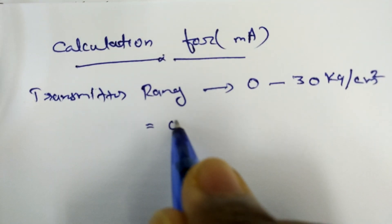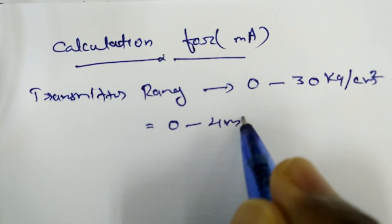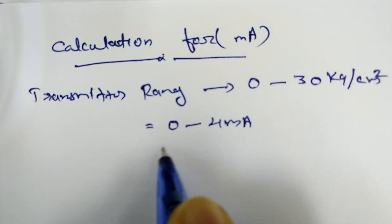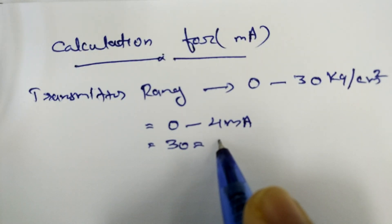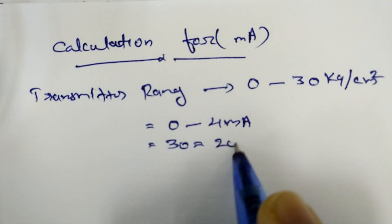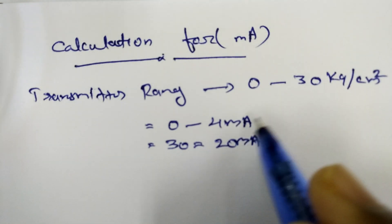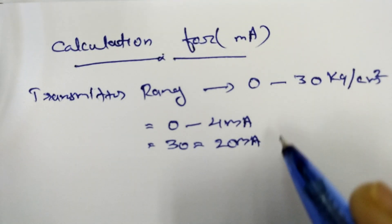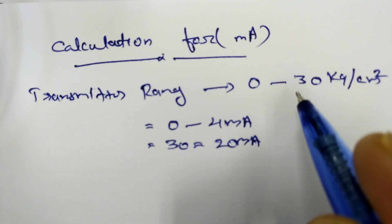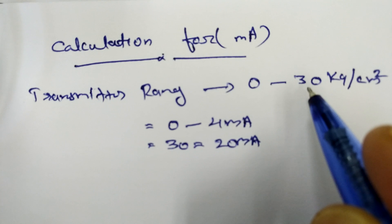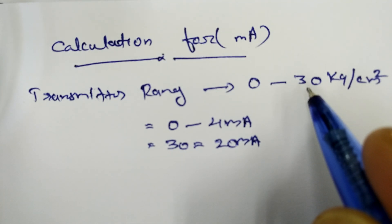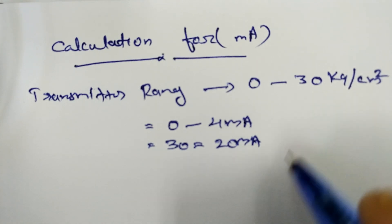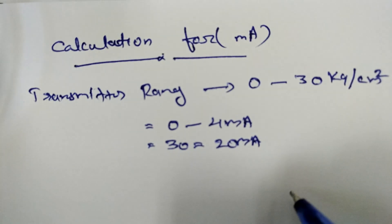0 is equal to 4 mA, and 30 is equal to 20 mA. For this equation, we will divide by 4.8.